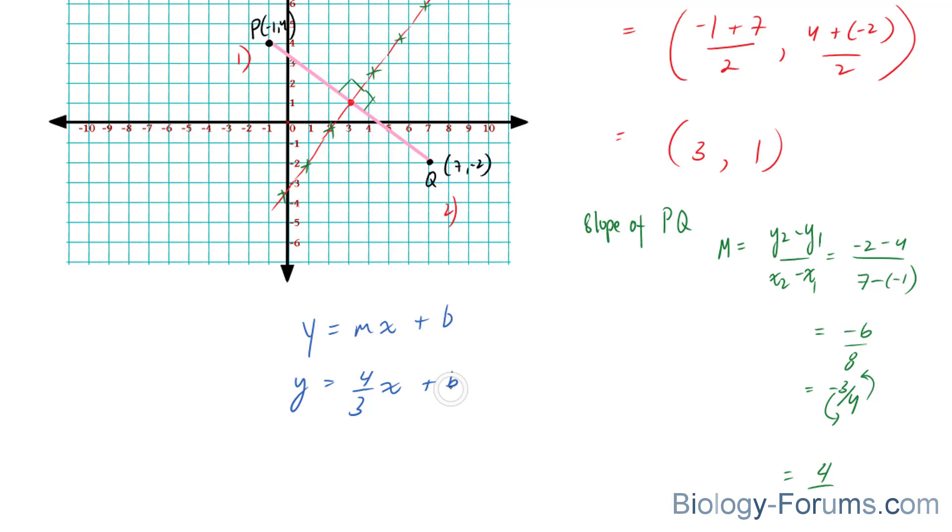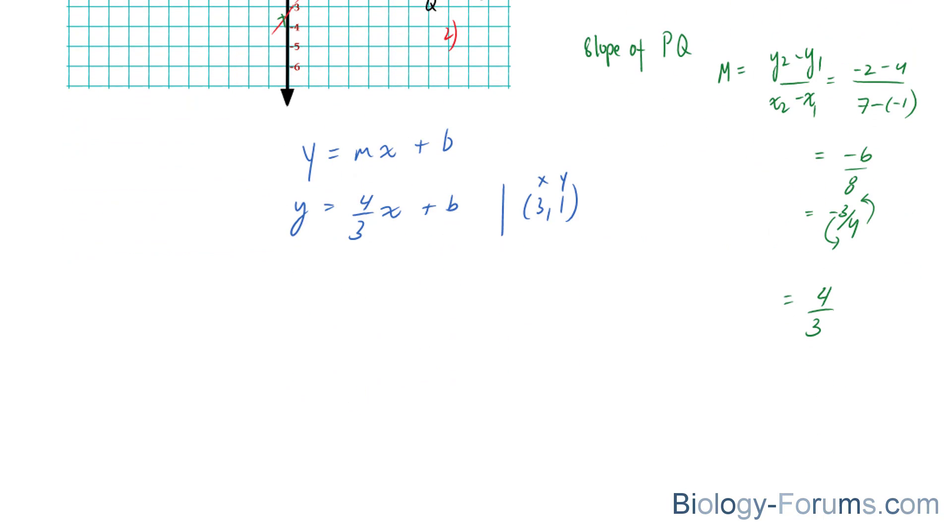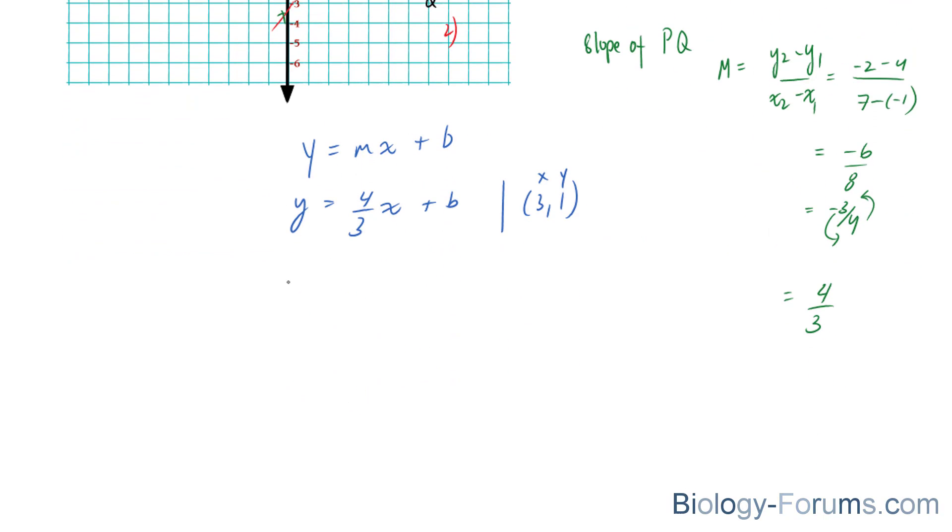And to find out our y-intercept, we can visually eyeball it, but we don't want to take any chances. So the best thing to do in a situation like this is to use another point on this red line and substitute it for y and x, but the only point that we actually have is the midpoint. And so that's what we're going to have to use. Our midpoint is at 3 and 1. That's going to serve as our x. That's going to serve as our y.